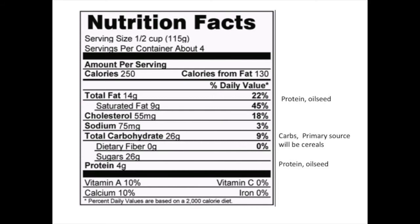Cereal crops are close substitutes for one another — for example, corn and wheat: you can make cornbread from corn and bread from wheat, and rice is also a very close substitute. Oilseeds among themselves are also major competitors of one another — for example, the uses of canola, except for some very specific uses, would be to make oil, and that would compete directly with soybean oil.